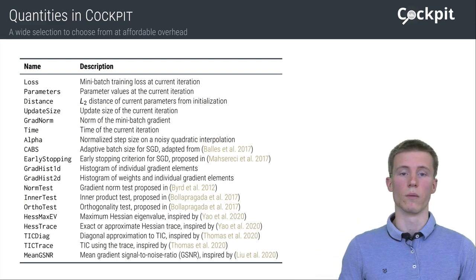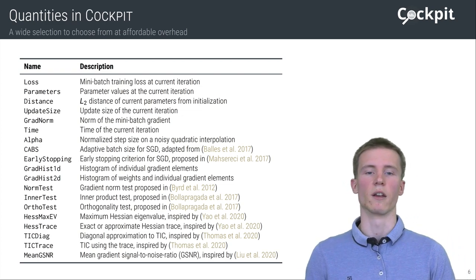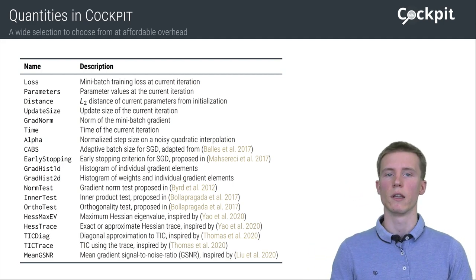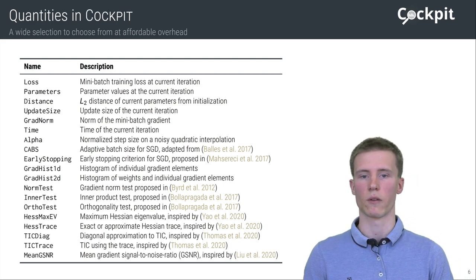To be practical, this information must of course be made available at an acceptable overhead, and Cockpit relies on the BackPACK library for PyTorch that efficiently computes most of those quantities during a backward pass.